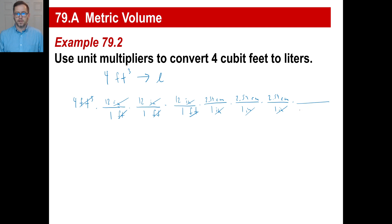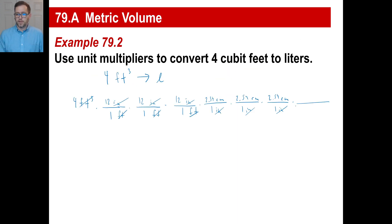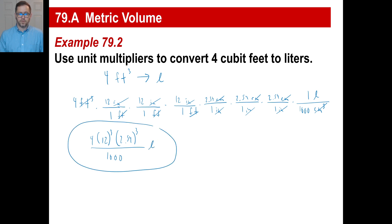Here's where it gets interesting. Cubic centimeters — that's what we have on top; we need it on the bottom. Look at your conversion: a cubic centimeter is the same thing as a milliliter, and 1,000 cubic centimeters is the same thing as one liter. So we can go ahead and do the conversion: 1,000 cubic centimeters equals one liter. That takes care of all three. So our final answer is four times 12 to the third power times 2.54 to the third power, all over 1,000. And that's how many liters we have. You can figure that out on a calculator.